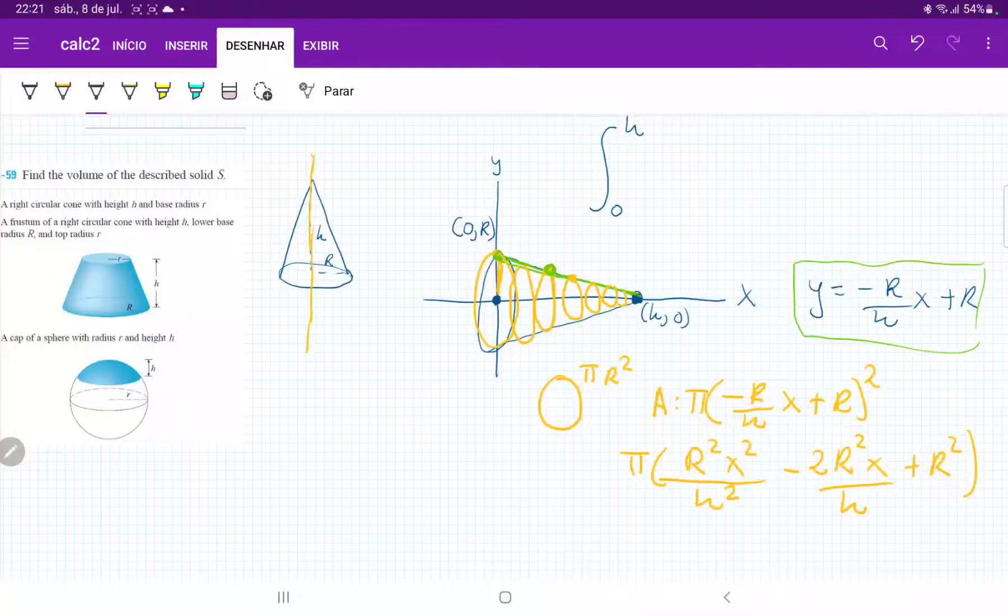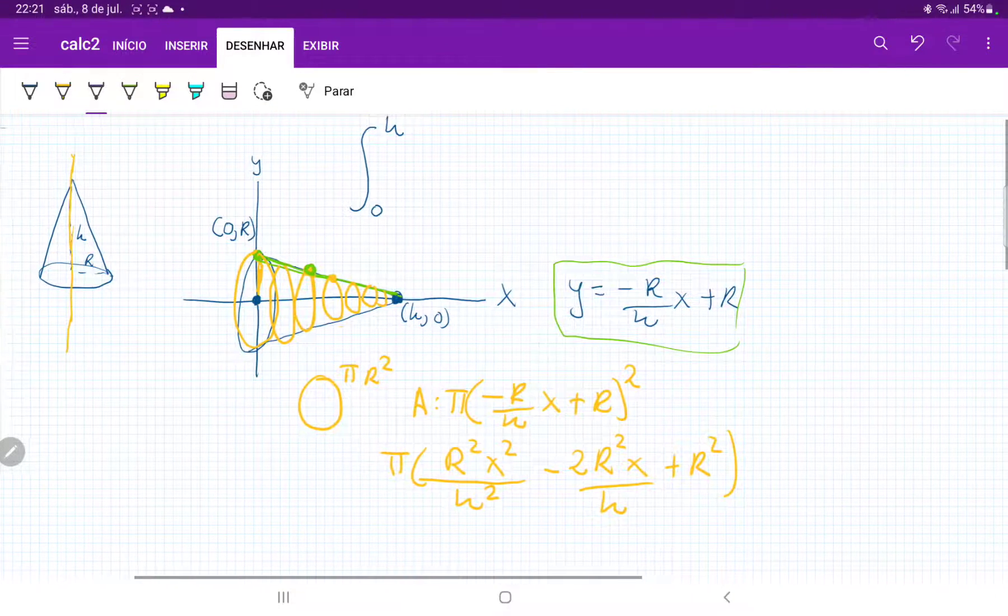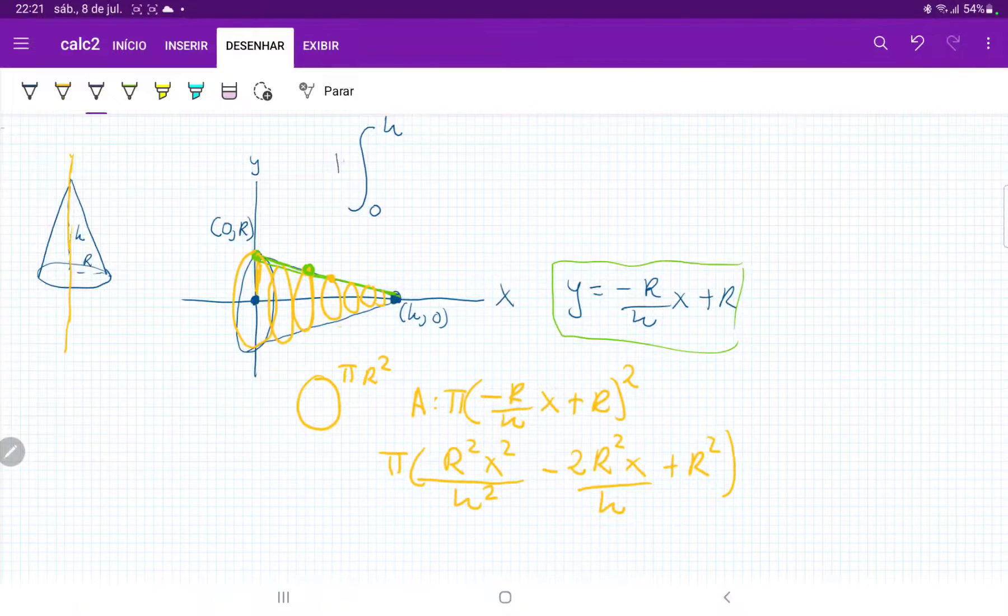Now we are ready to set this up in our interval. So this integral, the pi goes outside because it's a constant. I did this in the wrong color. The pi goes outside.